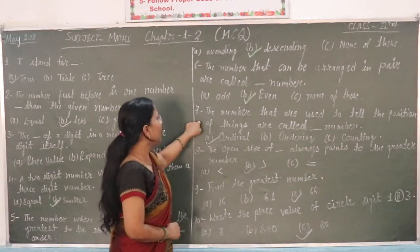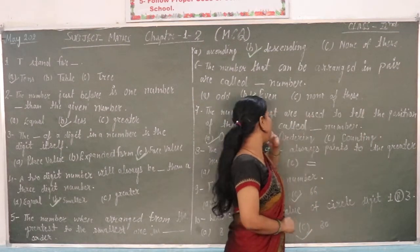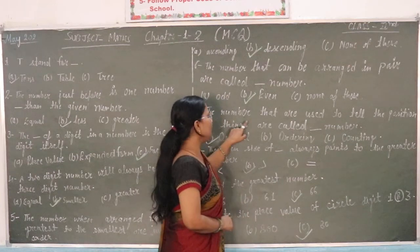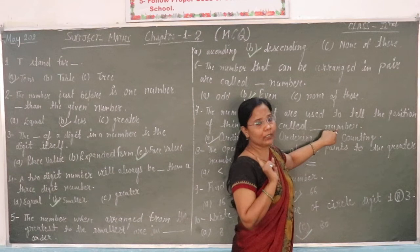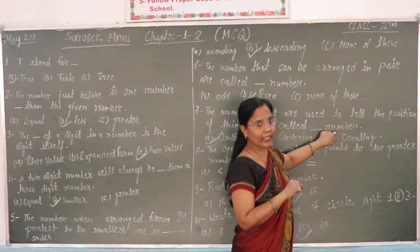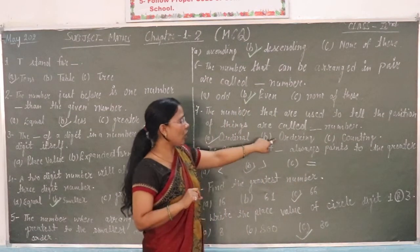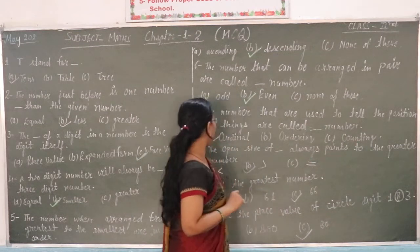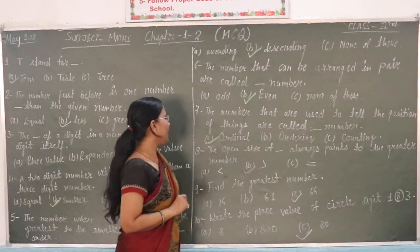The numbers that are used to tell the position of things are called blank numbers. Previous classes called these ordinary numbers. Ordinary numbers are called position numbers. The answer is ordinal numbers.